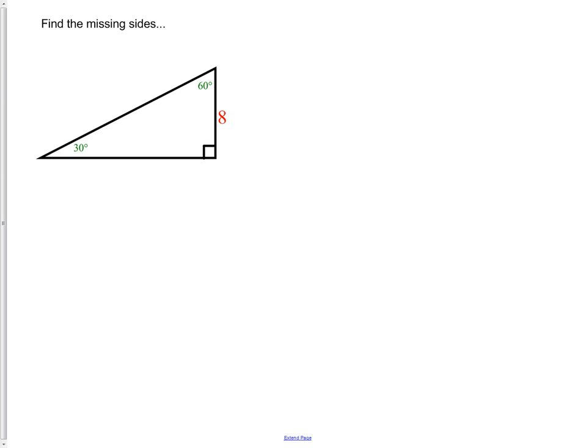Here's one where we have the side opposite the 30. Well, opposite the 30 is the n side. So this makes it really easy. We already know the value of n. n is 8.